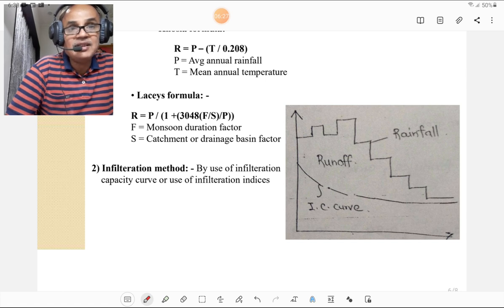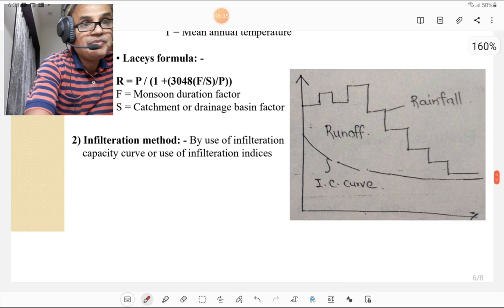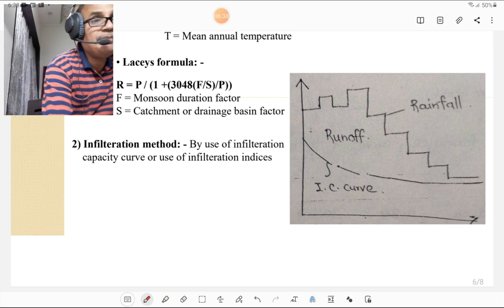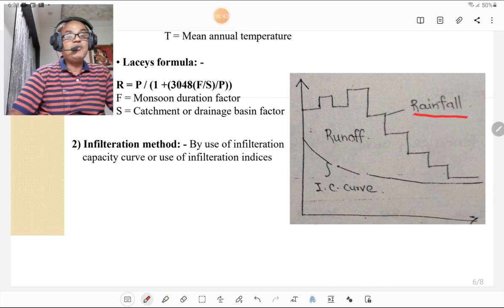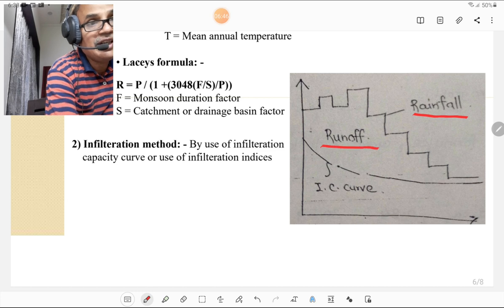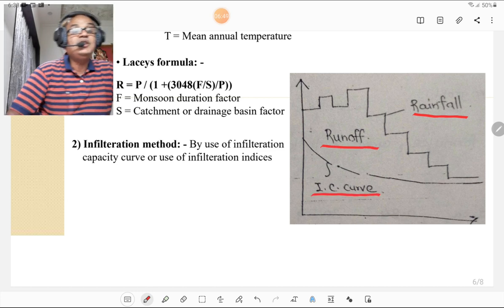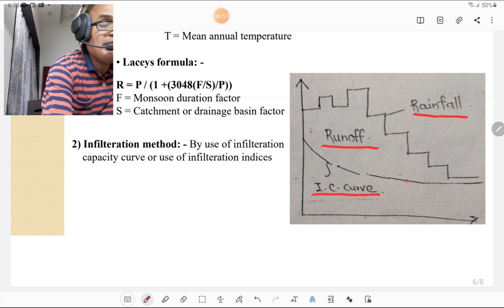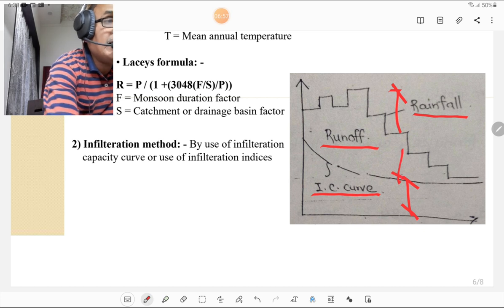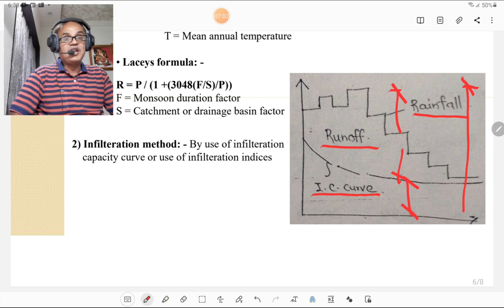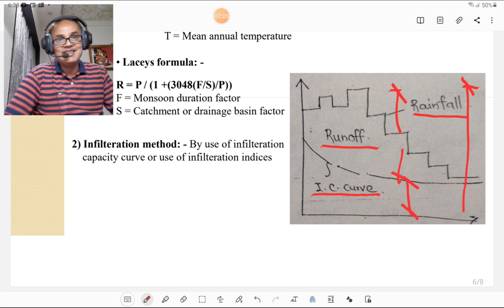Then infiltration methods. By using infiltration capacity curve or use of infiltration indices we can calculate the runoff. Please look at this figure. The figure shows the graph rainfall versus time, and runoff is shown here, and infiltration curve is also shown. The part below the infiltration curve is the losses, and the part above that is the runoff. And this overall part is the rainfall. Means runoff equals rainfall minus losses. That is simple.